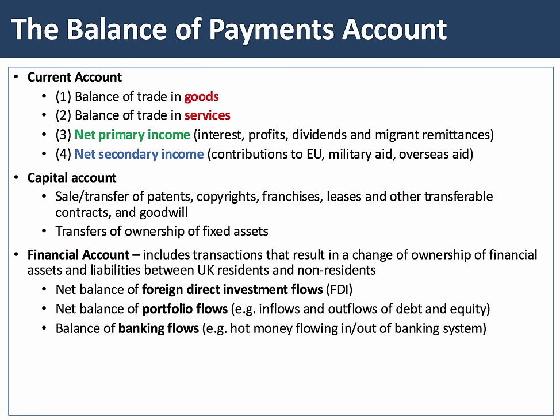The financial account involves big inflows and outflows of financial money across borders, changing the ownership of assets and liabilities between residents and non-residents. Three aspects stand out: first, the net balance of foreign direct investment, such as building physical manufacturing capacity in a country; second, portfolio flows — the inflow and outflow of debt, loans from banks in another nation, flows into property markets, and people buying and selling shares across national stock exchange boundaries.